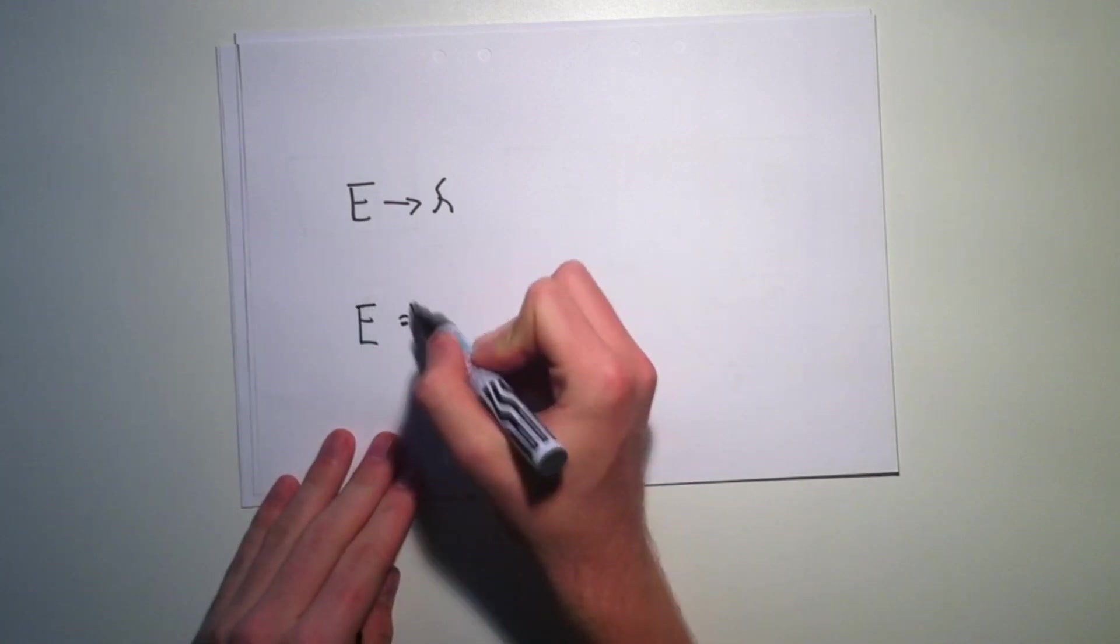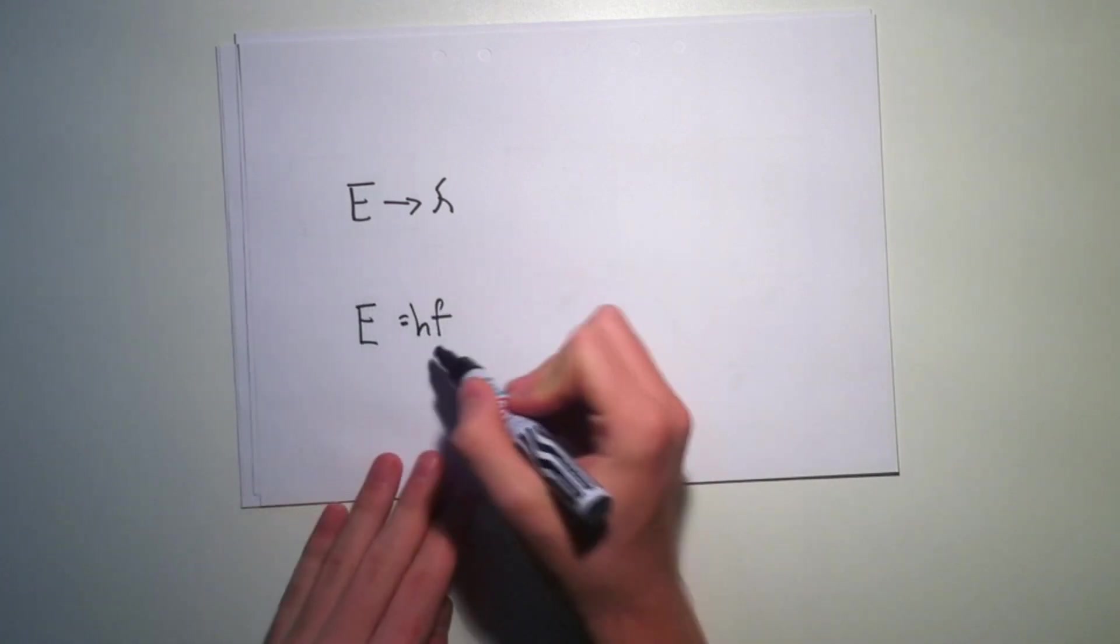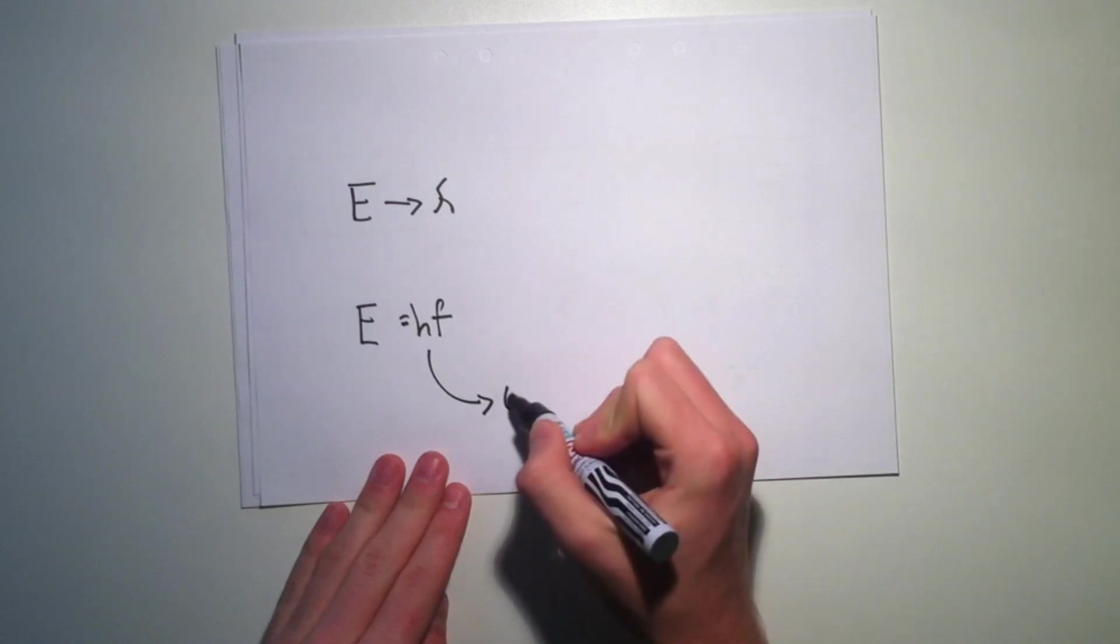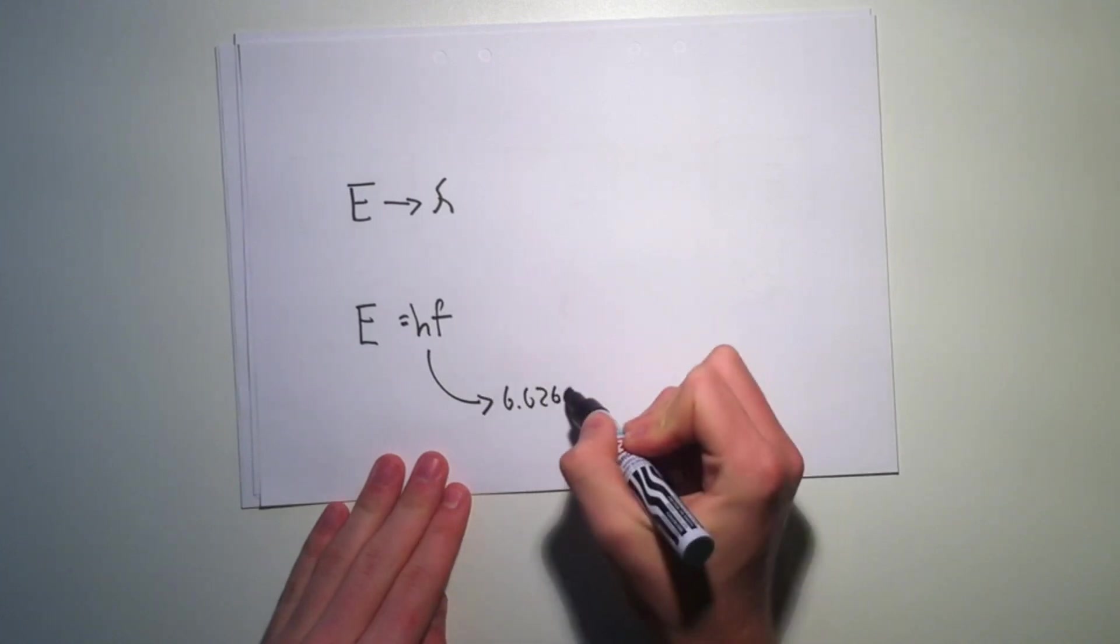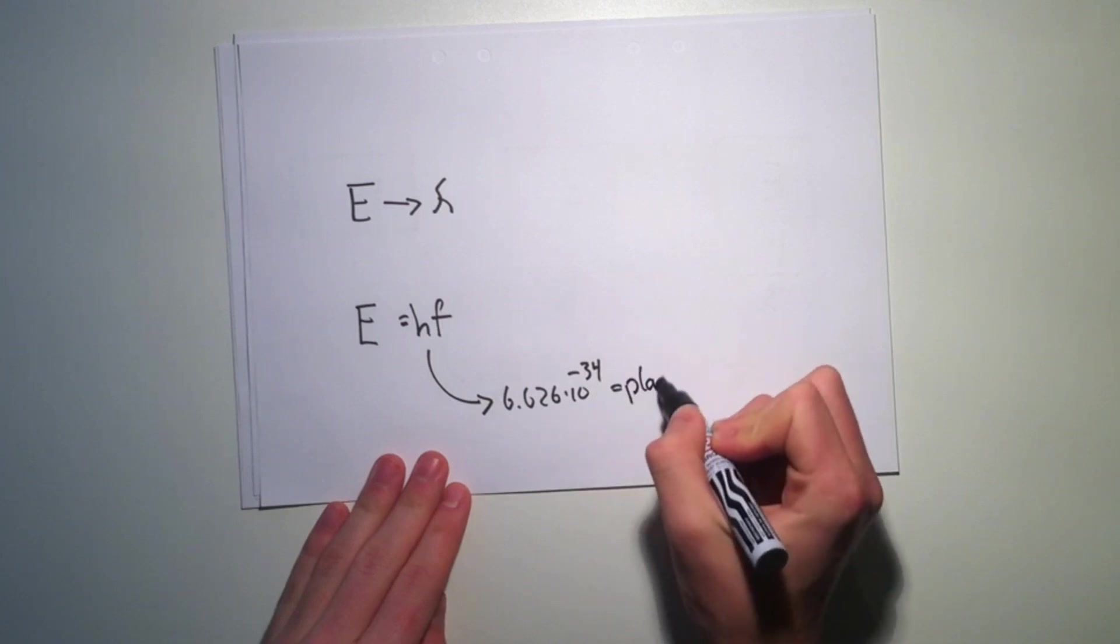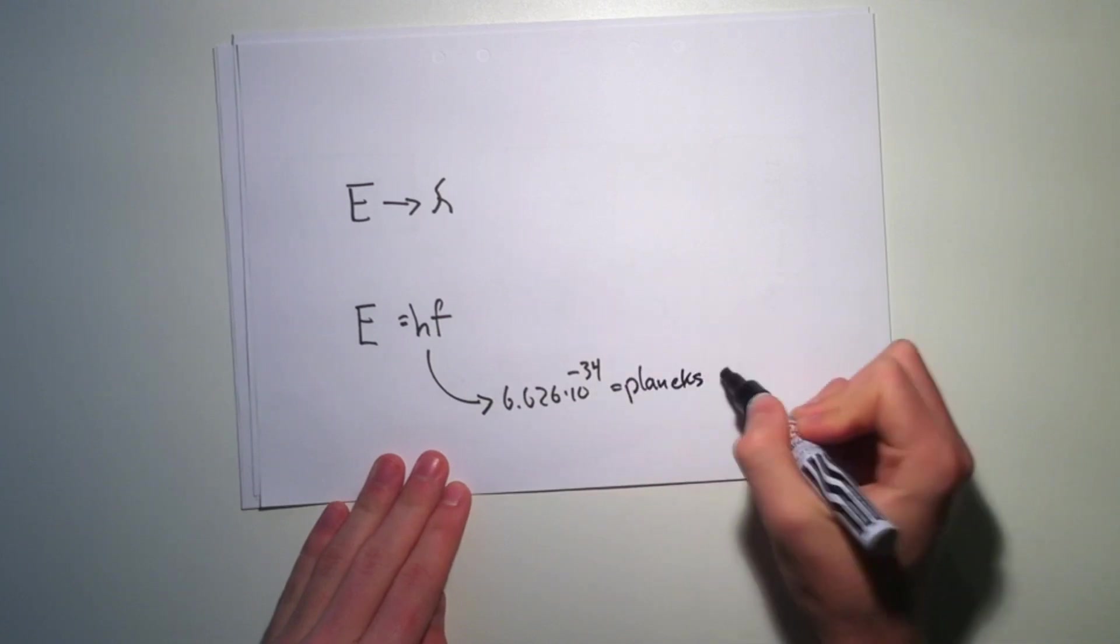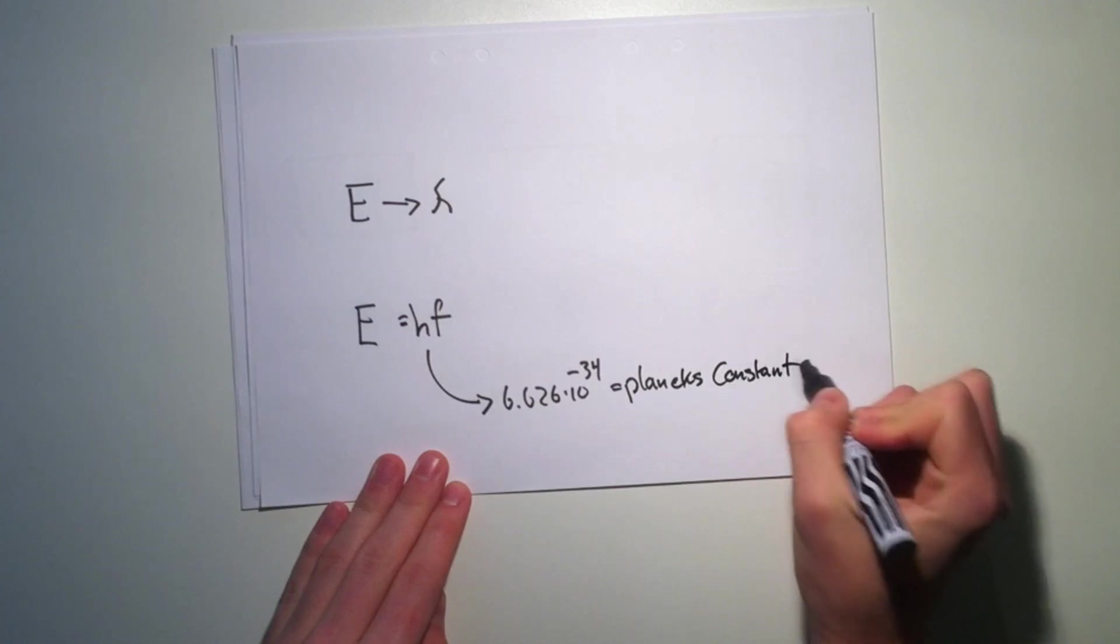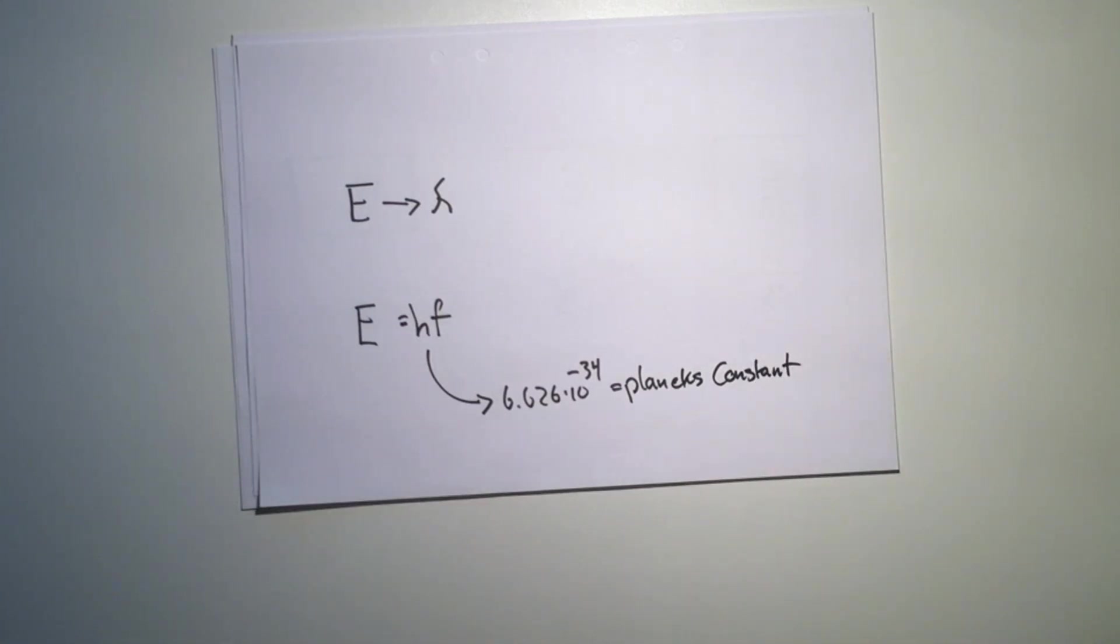h, or Planck's constant, which equals 6.626 times 10 to the minus 34. And the equation looks like this: E equals hf, where f is the frequency. And this was the birth of quantum physics.